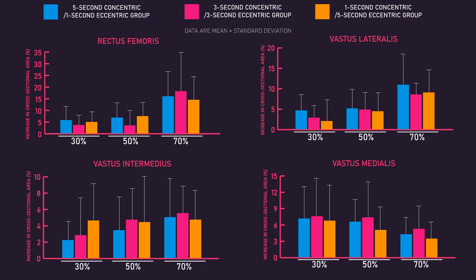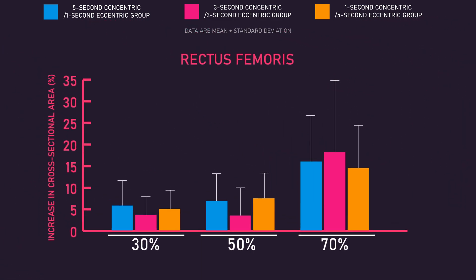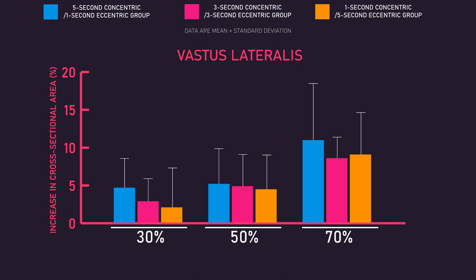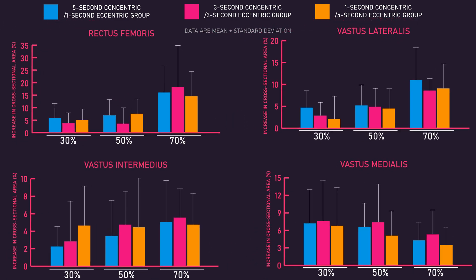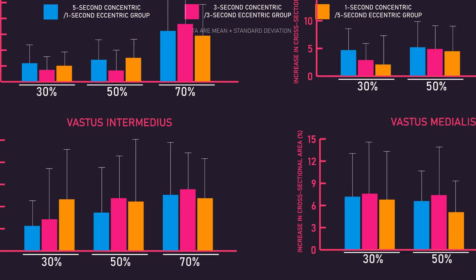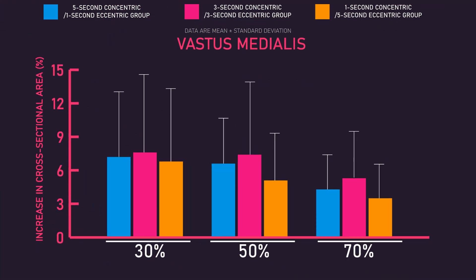There were no other statistically significant differences; however, looking at the overall data, there potentially could be some other practically meaningful differences. At 70% of the thigh for the rectus femoris, increases seemed to favour the 3-3 group. At 30% for the vastus lateralis, increases seemed to favour the 5-5 group. At 30% and 50% of the thigh for the vastus medialis, increases seemed to favour the 3-3 group versus the 1-second concentric / 5-second eccentric group. At 70% of the thigh for the vastus medialis, increases also seemed to favour the 3-3 group over the 1-5 group.